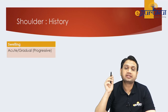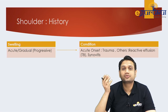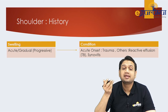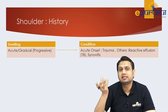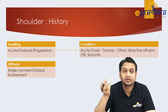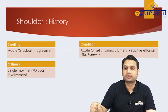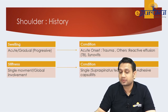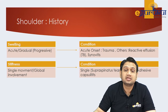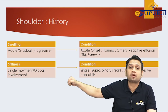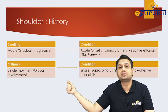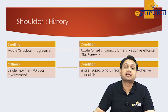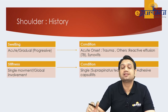The second complaint is swelling. Ask if it is acute or gradual — acute swellings are seen with hematoma related to trauma or fractures, while reactive effusion is seen in synovitis or tuberculosis. For stiffness, ask whether it is a single movement restricted or global restriction. Single movement restriction relates to a particular muscle, while global restriction suggests adhesive capsulitis, frozen shoulder, or periarthritis.